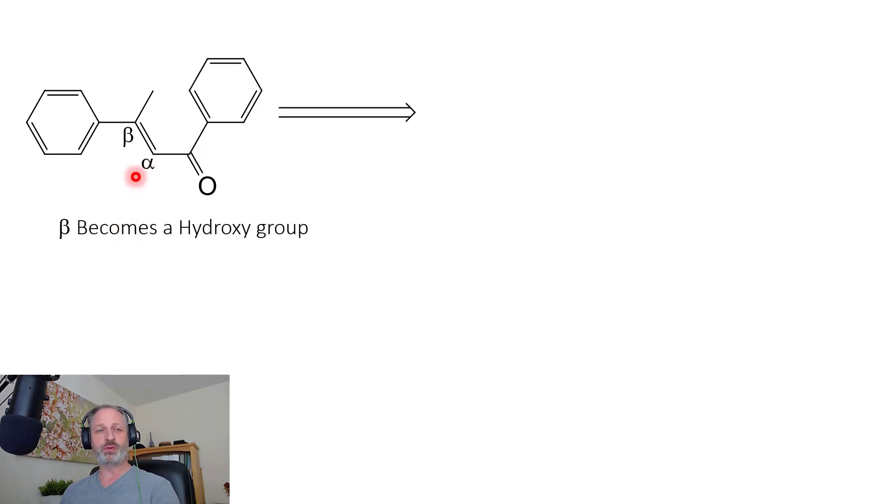The first thing that we want to do is identify that beta position. And when we go to our next step kind of backwards, we want to put a hydroxy group right at that beta position, and you can see here that's what we've done. So there's your alpha, there's your beta, now we have an OH position here.